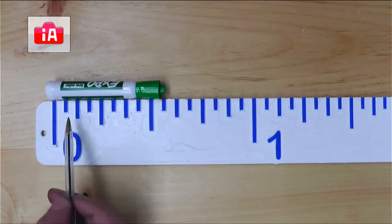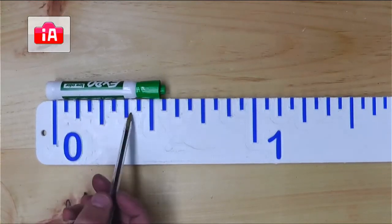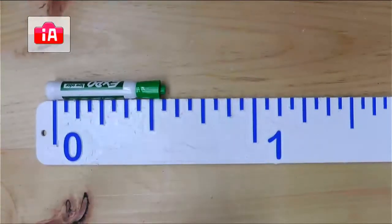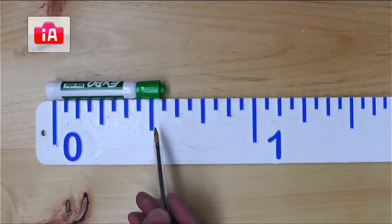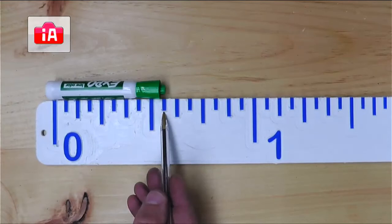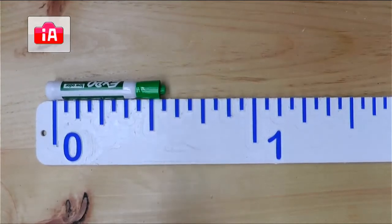Nine sixteenths. So remember, you can either just count one, two, three, four, five, six, seven, eight, nine. You can also, I know that this is a half right here. And I know a half is eight sixteenths. So I know I can add one and I get nine sixteenths. All right.